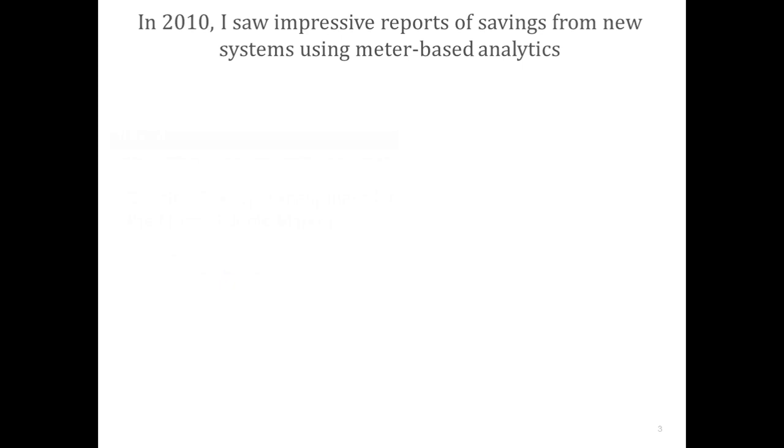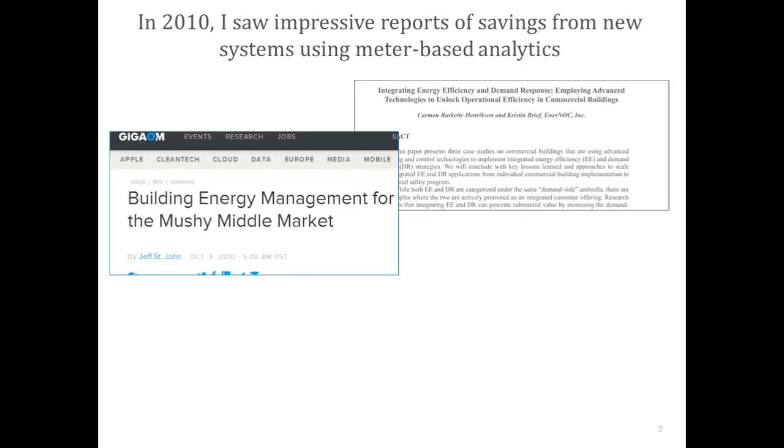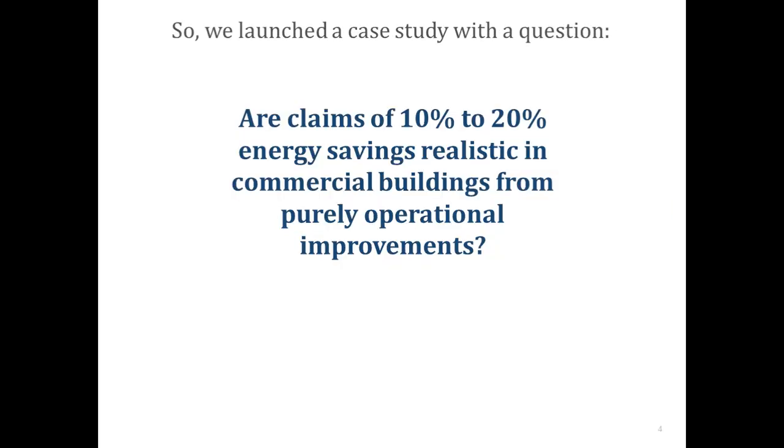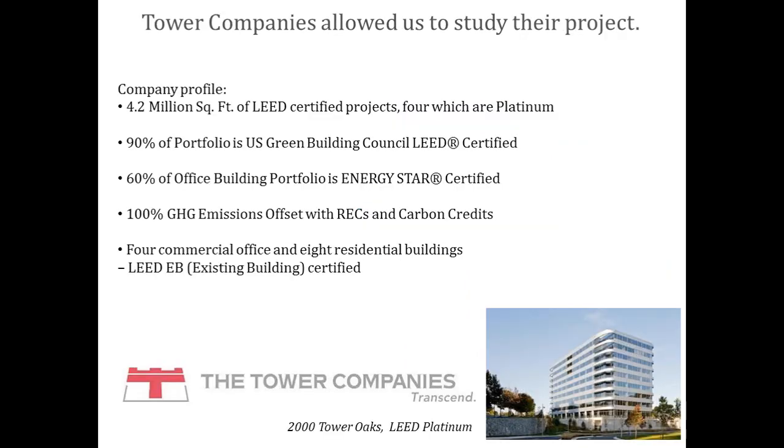In 2010, I saw impressive results in publications and reports about meter data analytics being used for better operations, often called continuous commissioning, many other names for this kind of function, but many of the reports were from vendors, and many of the reports were about institutional buildings. So I decided to study it, and we launched a case study. I just had one question I wanted to answer, and that is, are the claims we were seeing, 10% to 20% savings, realistic in commercial buildings from purely operational improvements, no major equipment changes, or capital expenses? And the answer is yes.